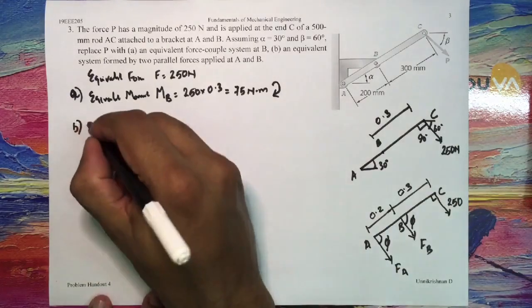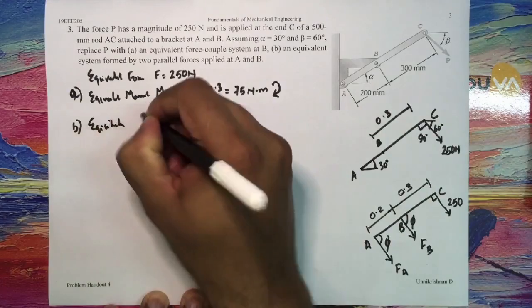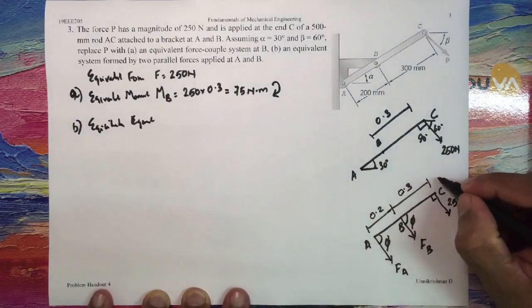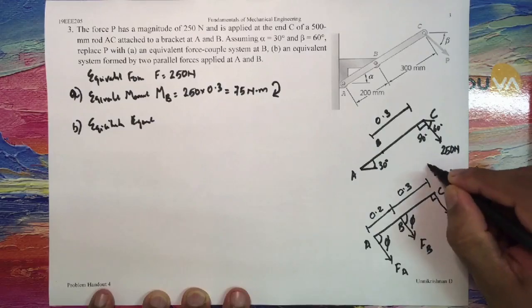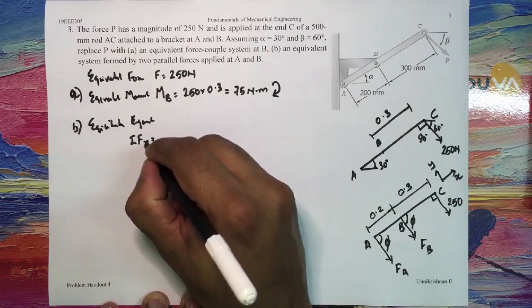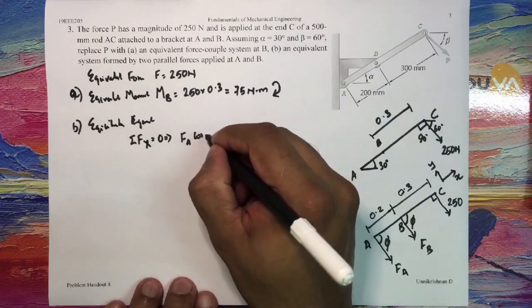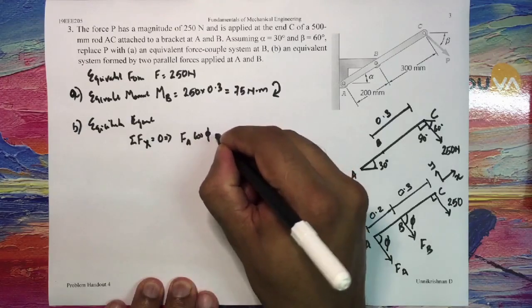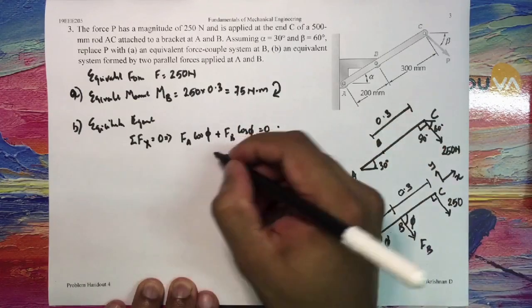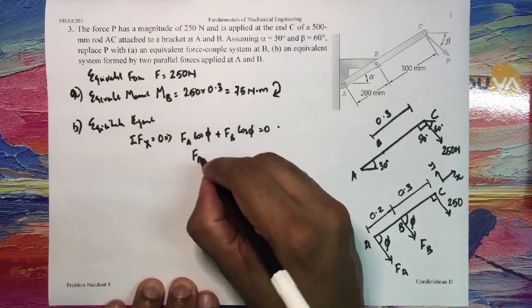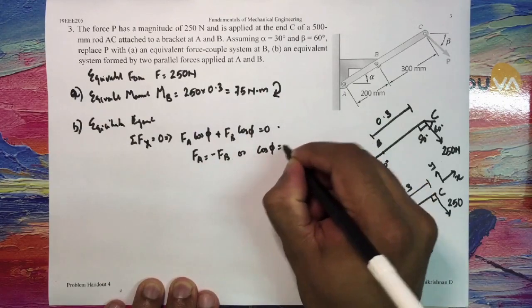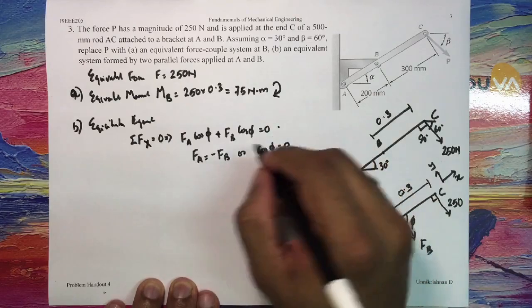The forces FA and FB should create the same moment as the 250 Newton force about point B, but there is a catch here: it should be remaining in equilibrium. Let us consider the equilibrium equations, and for easiness I am assuming an X and Y axis like this. So for equilibrium equations, let us consider sigma FX equal to 0, which implies FA cos phi plus FB cos phi should be equal to 0, which leaves us with two options: one is FA is equal to minus FB, or cos phi should be equal to 0.